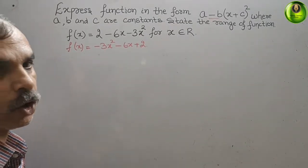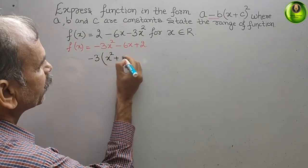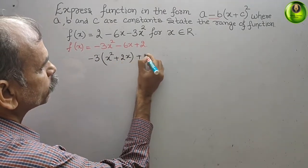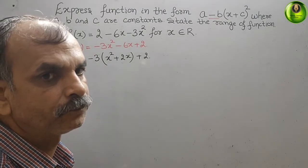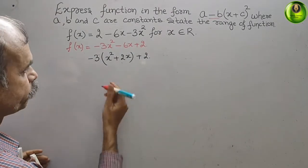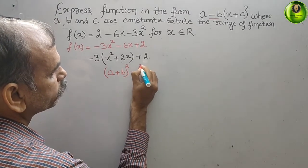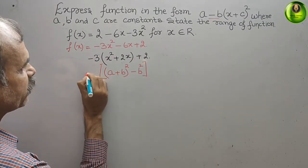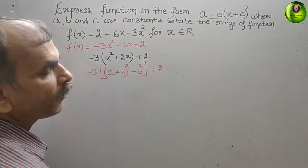Now we take minus 3 as common from the first two terms. Inside the bracket we get x square plus 2x. Since the bracket has a positive x square plus 2x, we will use the (a plus b) whole square identity, which equals a square plus b square plus 2ab, minus b square outside.